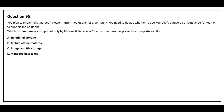Question number 95: You plan to implement Microsoft Power Platform solutions for a company. You need to decide whether to use Microsoft Dataverse or Dataverse for Teams. Which two features are supported only by Microsoft Dataverse? Option A: relational storage. Option B: mobile offline features. Option C: image and file storage. Option D: managed data leaks. The correct answers are option B, mobile offline features, and option D, managed data leaks.